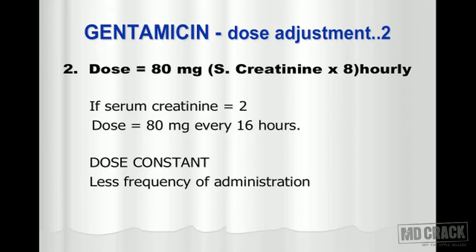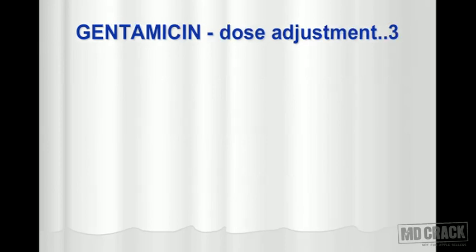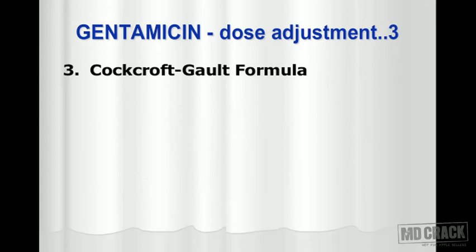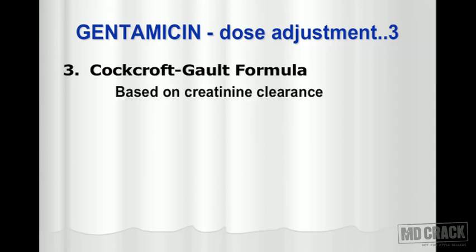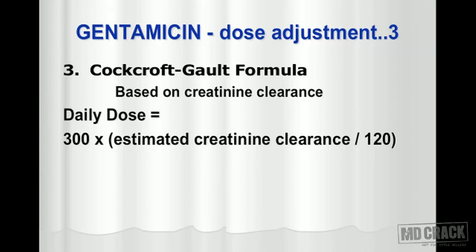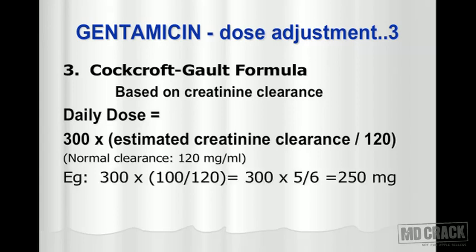We move on to the third method of dose adjustment, called the Cockcroft-Gault formula. This method is based on creatinine clearance, not serum creatinine. The daily dose equals 300 multiplied by estimated creatinine clearance in the patient, divided by 120. The factor 120 in the denominator is because normal creatinine clearance is taken as 120 ml per minute for this calculation.